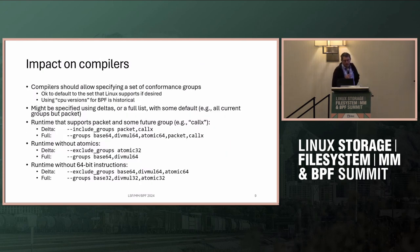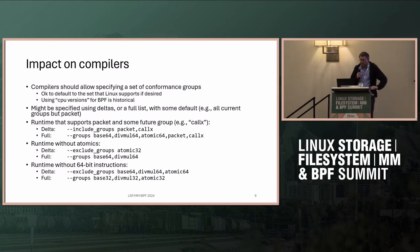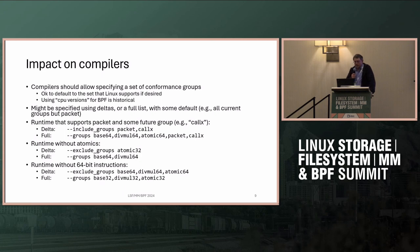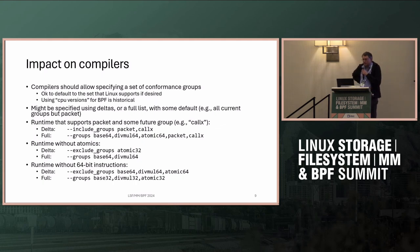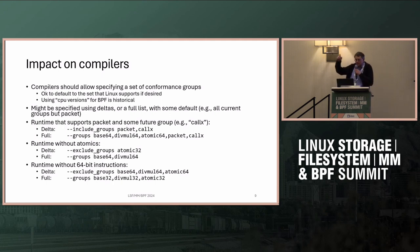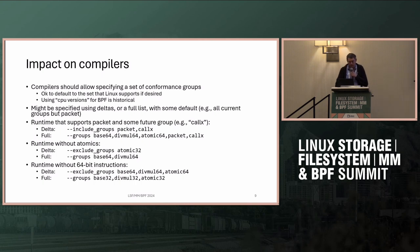Impact on compilers: my recommendation is that compilers should allow specifying the set of conformance groups. If I'm developing an offload card, I can pick a set of conformance groups to support and come to your compiler and say, here's the set I support — please generate code for that, or fail compilation if a construct isn't supported. This notion of using CPU versions is not granular enough for today's use cases. I consider CPU version usage to be historical. Going forward, the right approach is to name conformance groups, not CPU versions, so a runtime can say whether it supports or doesn't support a given group.